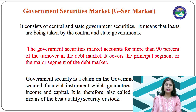The government securities market accounts for more than 90 percent of the turnover in the debt market, covering the principal or major segment of the debt market. A government security is a claim on the government — it is an absolutely secured financial instrument which guarantees the certainty of both income and capital. It is therefore also called a gilt-edged security, which means a security or stock of the best quality.